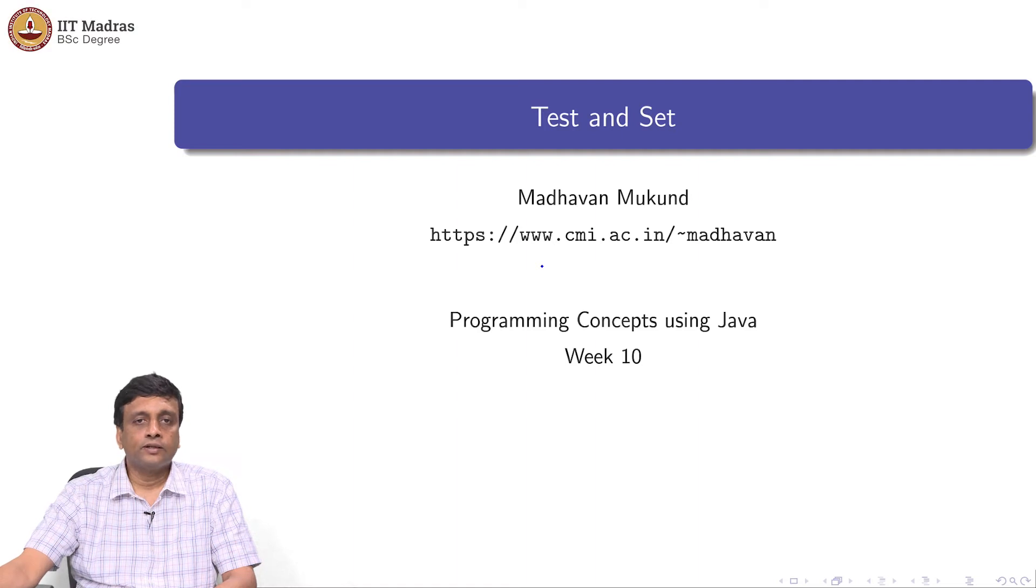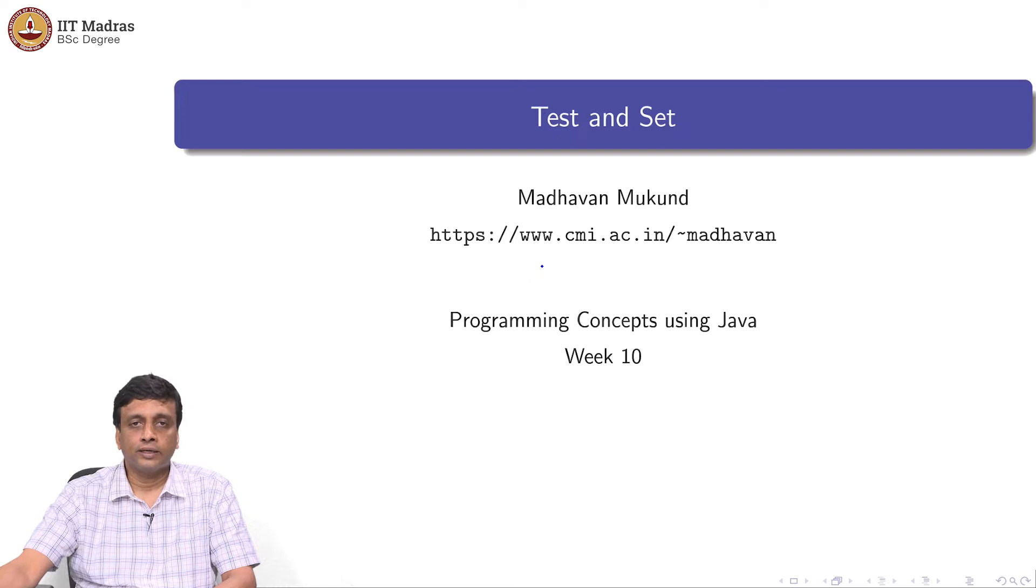We are looking at synchronization of access to critical sections in concurrent programs. We said that we have these protocols for mutual exclusion that are tricky to use, so we would like some programming level support.